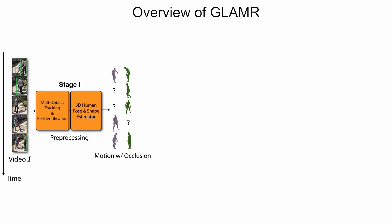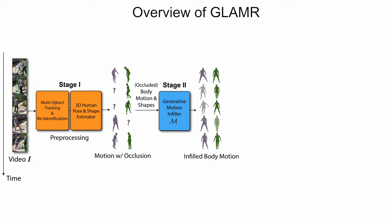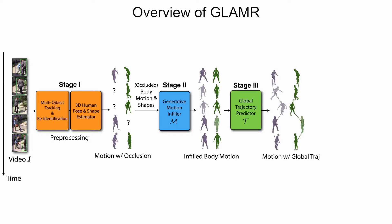The motion can have occlusions where poses for some frames are missing because the person is occluded in the video. In the next stage, we propose to learn a generative motion infiller to infill occluded body motions to obtain occlusion-free body motions. Next, we propose to learn a global trajectory predictor that infers the global root translations and rotations of each person from their local body motion.